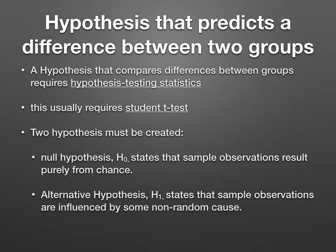The alternative hypothesis would say, for example, that drug one will allow planaria to regenerate at a faster rate than drug two. An alternative hypothesis states that the sample observations are influenced by some non-random cause. So remember: the null hypothesis says there's no difference between the groups — observations result from chance — and the alternative hypothesis states that observations are influenced by some non-random cause, meaning there would be a difference.